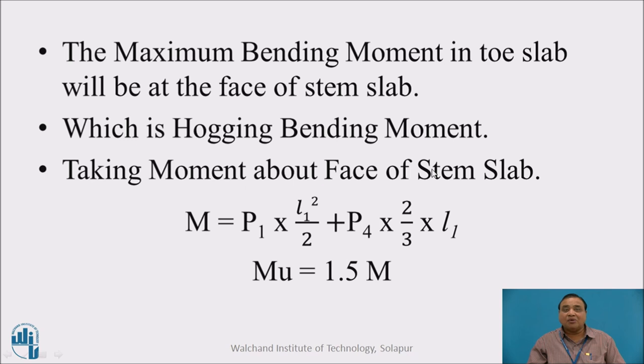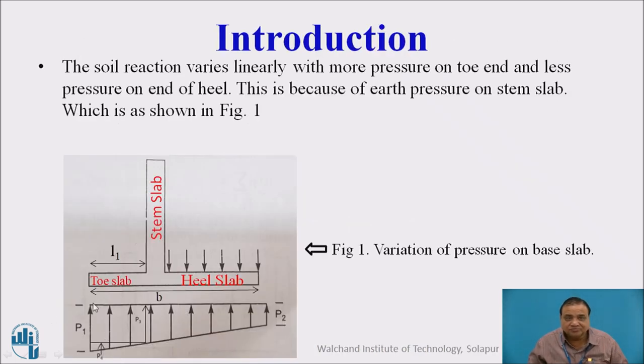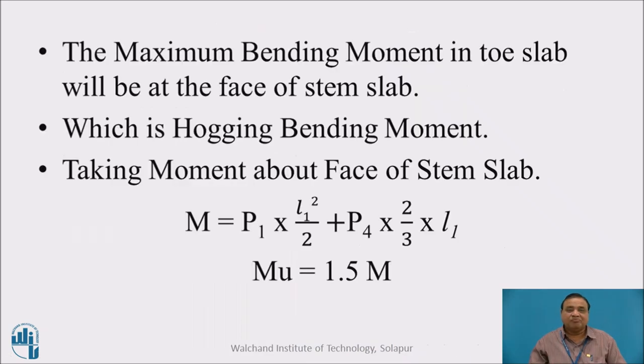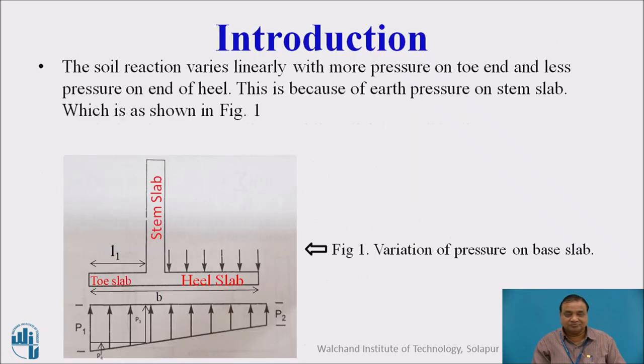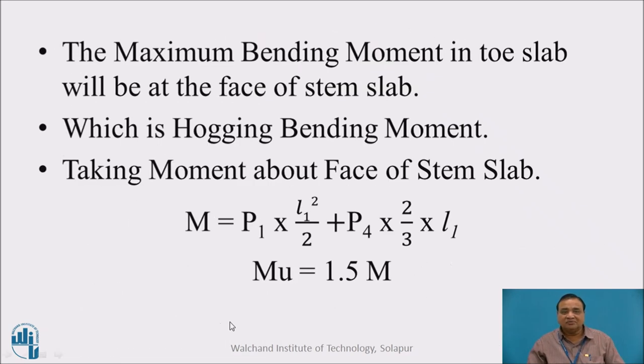Taking moment about the face of the stem slab, M equals P3 into L1 square by 2, that will be the pressure due to UDL, then P4 into 2/3 L1. This is the P4 load at 2/3 L1 of a triangular portion. We will find out the maximum bending moment, MU equals 1.5 times M.